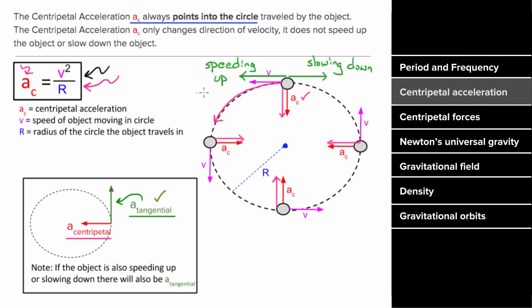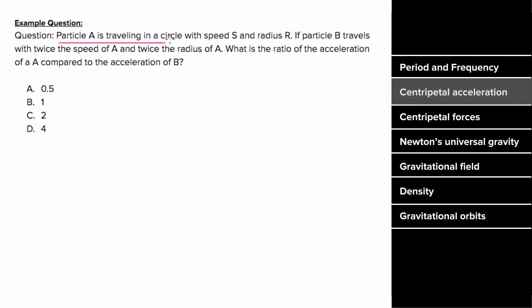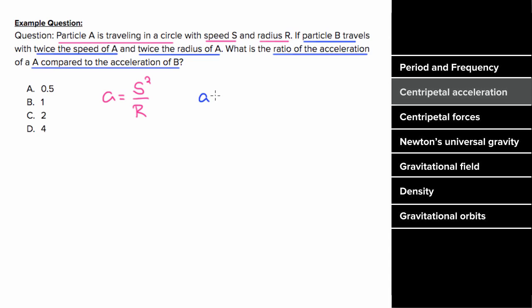Let's say particle A is traveling in a circle with constant speed S and radius R. Particle B is traveling in a circle with twice the speed of A and twice the radius of A. What's the ratio of the acceleration of particle A compared to particle B? Particle A has centripetal acceleration S² over R. Particle B has acceleration (2S)² over 2R, which gives four over two, or two times S² over R. So the ratio of particle A's acceleration to particle B's is one half.